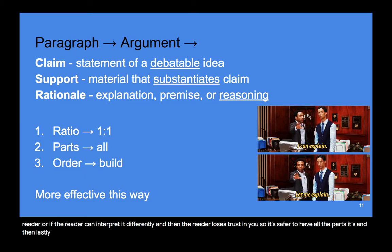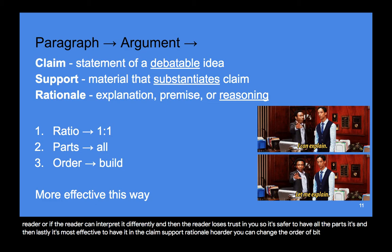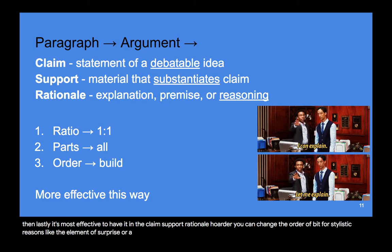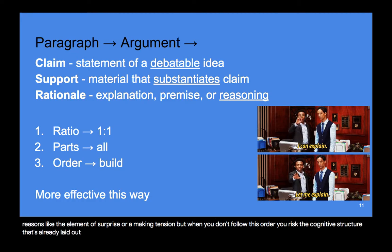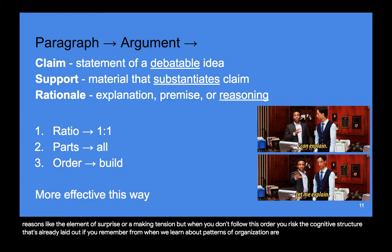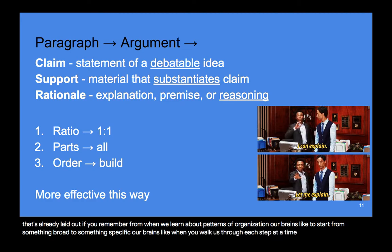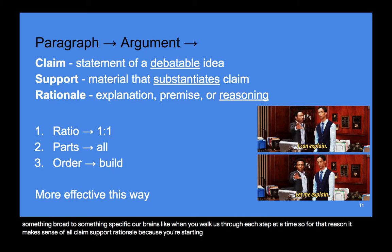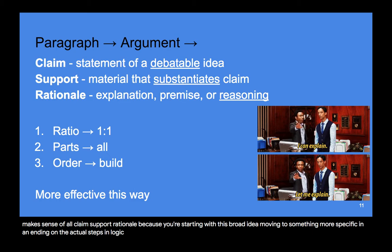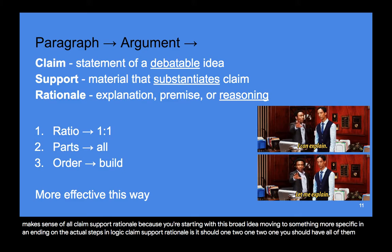It's most effective to have the argument in claim–support–rationale order. You can change the order slightly for stylistic reasons, like creating surprise or tension. But when you don't follow this order, you risk the cognitive structure already laid out. Our brains like to start from something broad to something specific and be walked through each step. So it makes sense to follow claim, support, rationale — starting with a broad idea, moving to something more specific, and ending on the actual logical steps. The main takeaway is 1-to-1-to-1, have all of them, and keep them in that order.